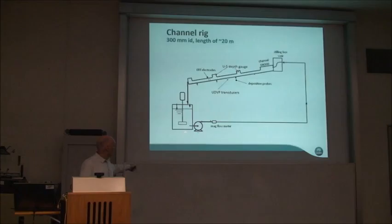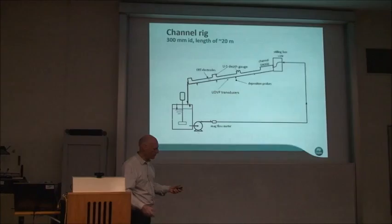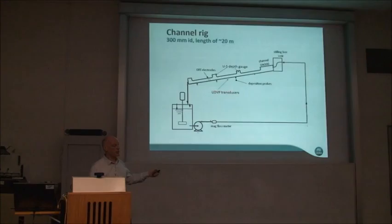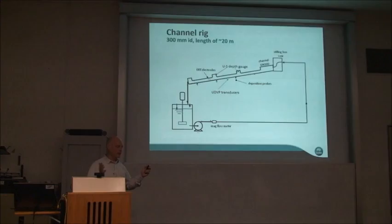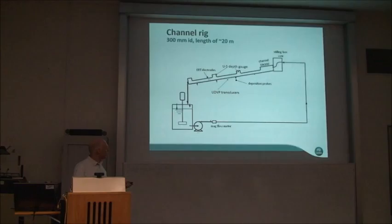The setup is: slurry out tank, stirred to keep everything suspended, pumped through a magnetic flow meter so we know the volumetric flow rate, then pumped up to a stilling box weir. This replicates the plunge pool on the TSF — all pipeline kinetic energy is dissipated and we just have gravitational flow. A steady state develops very quickly. It's a 300mm diameter pipe, and channels usually sit in the very bottom of the pipe — quite shallow, less than 100mm — very similar to what we've seen on TSF sites.